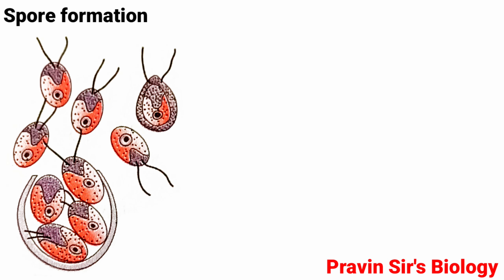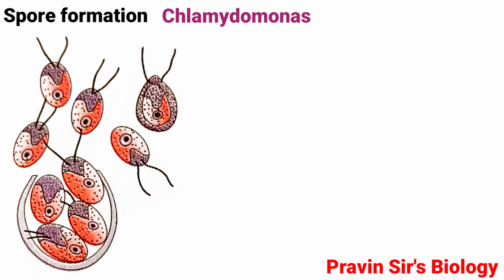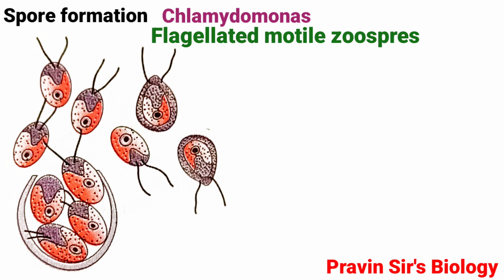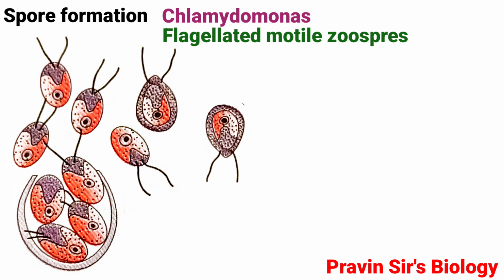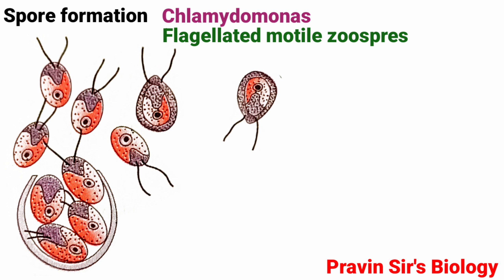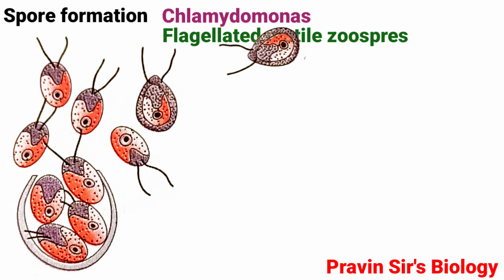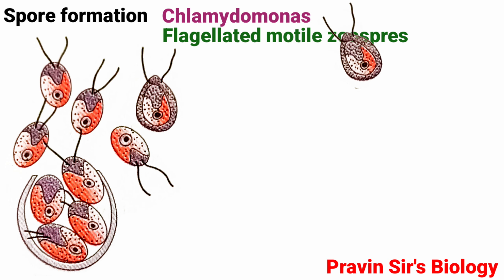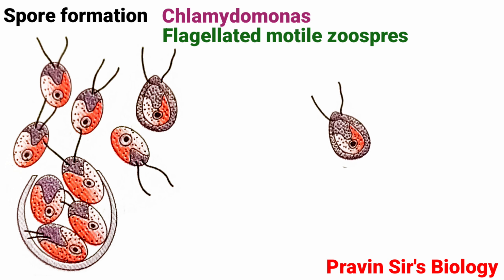Spore formation: In Chlamydomonas, asexual reproduction occurs by flagellated motile zoospores, which can grow independently into new individuals.